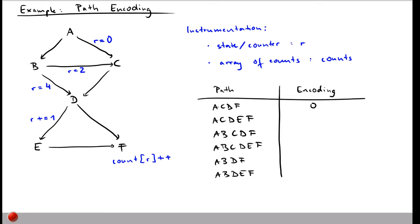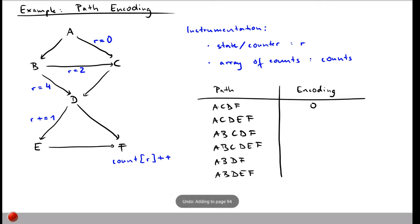For path ACDEF: we also initialize R to 0 at edge A to C, then go C to D, D to E — where we add 1 to R making it 1 — then E to F. So the encoding of this path is 1.